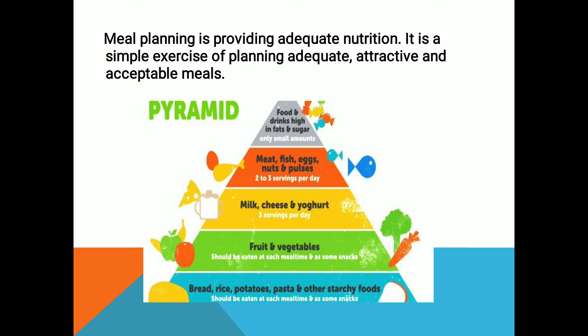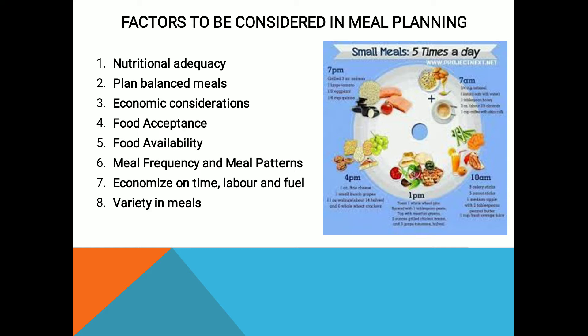Before moving further, I would like to revise with you the definition of meal planning. Meal planning is nothing but providing adequate nutrition — it is a simple exercise of planning nutritionally adequate, attractive, as well as acceptable meals for individuals. As we have seen in previous videos, meal planning considers the individual's likes and dislikes. We plan our meal planning according to the food pyramid so that all food groups can be included. So let's move towards our main topic: factors affecting meal planning, ya jinhe factors ko dhyan mein rakhkar aahar ka ayojan karte hain.